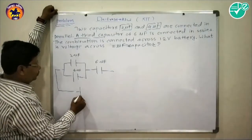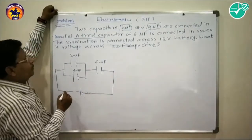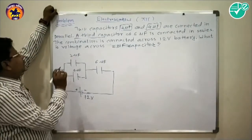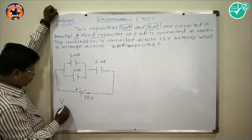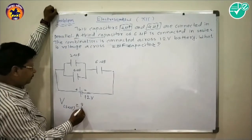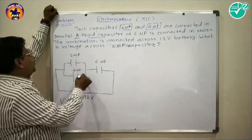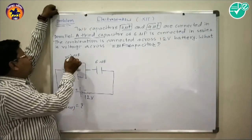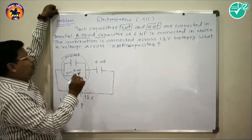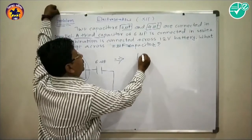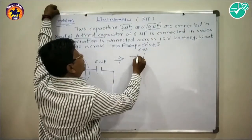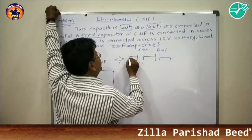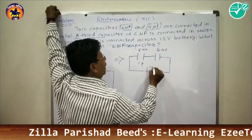This combination is connected to a battery of 12 volts, and we want to find the voltage across the 2 microfarad capacitor. Since 2 microfarad and 4 microfarad are in parallel, their equivalent capacitance is 2 + 4 = 6 microfarad (Cp). The circuit now has Cp = 6 microfarad in series with the 6 microfarad capacitor and a 12-volt battery.